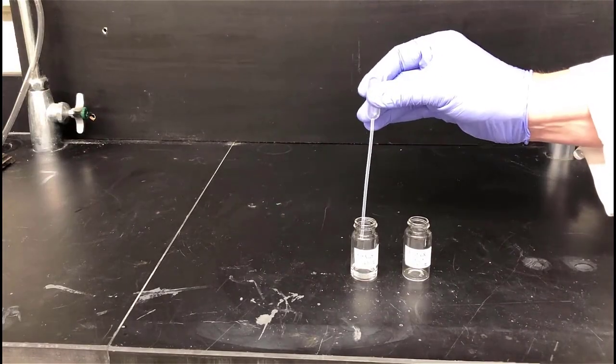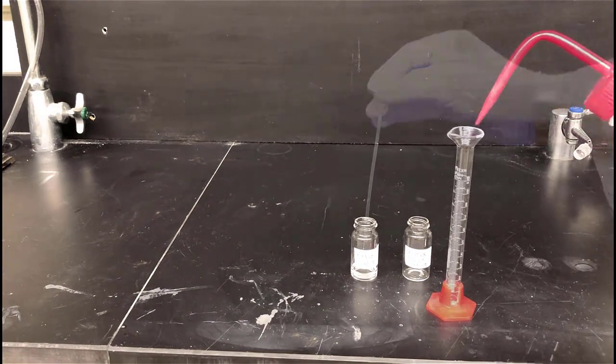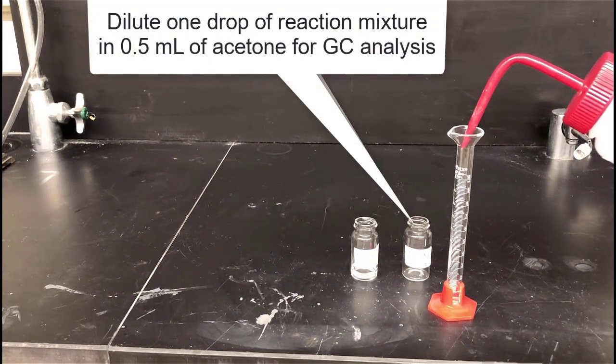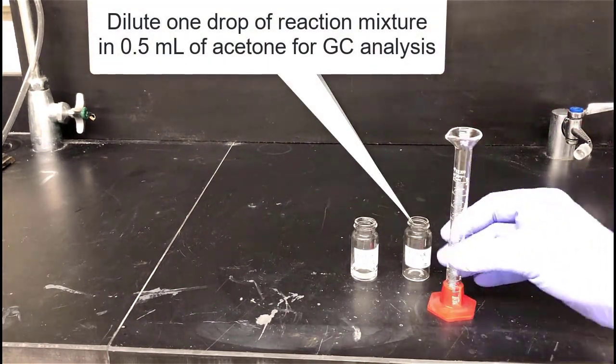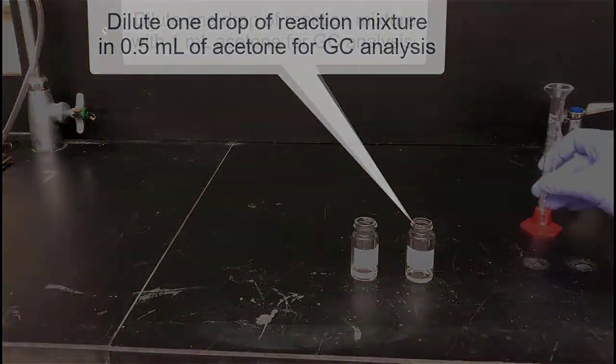We'll need to dilute our sample to analyze it by GC. It's too concentrated to inject directly into the GC instrument. So dilute one drop of your reaction mixture in 0.5 milliliters of acetone.